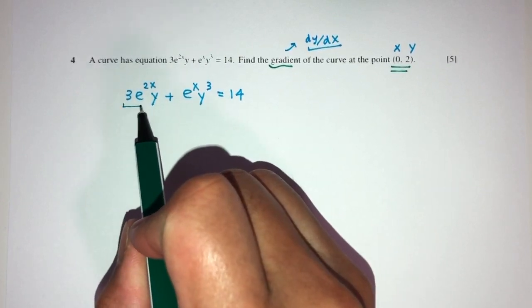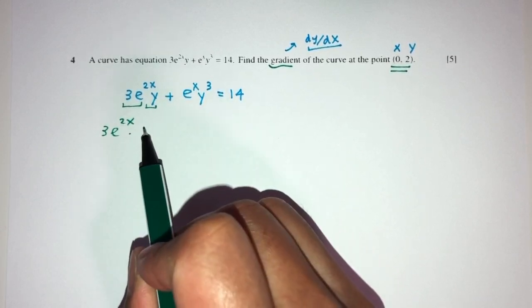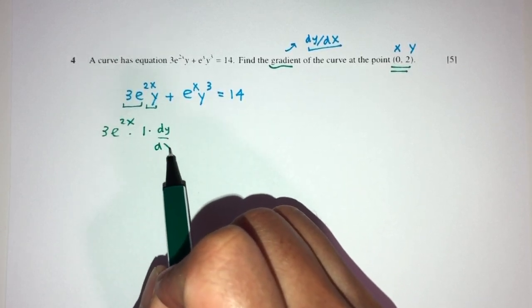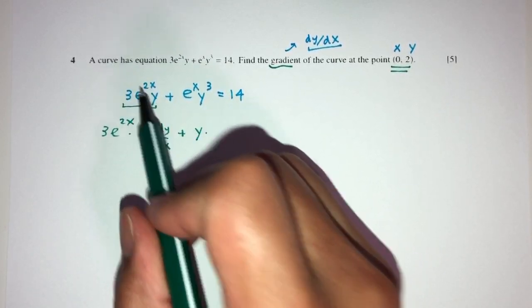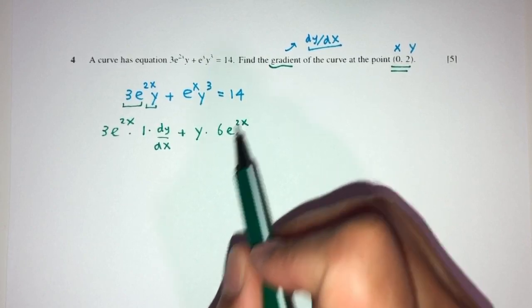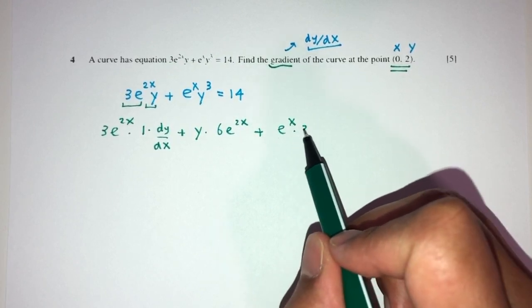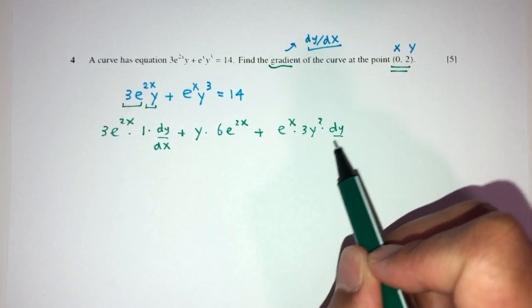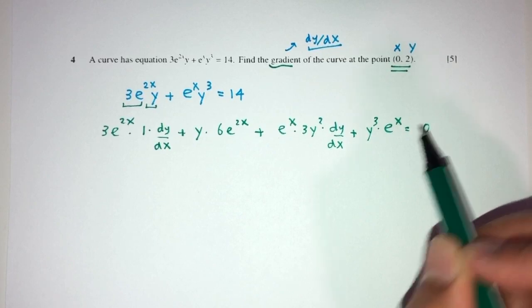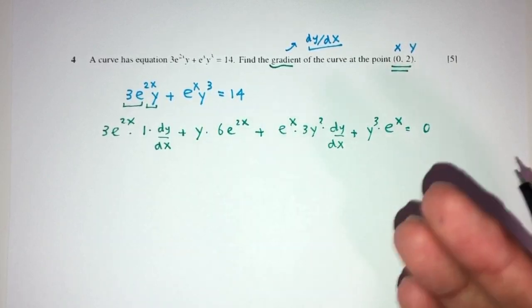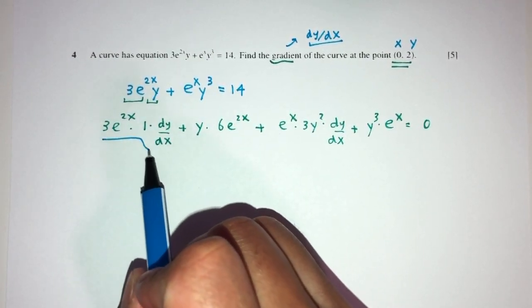Step by step, how would you do this? First we have to use the product rule. You will have 3 exponential 2xy times d by dx of y, that should be dy by dx, plus 2y times d by dx of exponential 2xy, that should be 6y exponential 2x. First one done. Then plus exponential xy times 3y squared dy by dx plus y cubed exponential x. This one, that will be 0, because this is a constant over here. Differentiate, that will be 0.